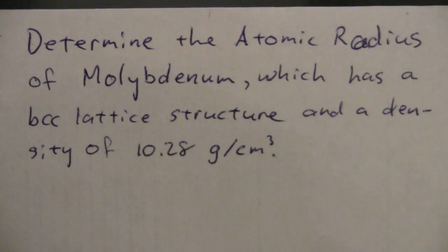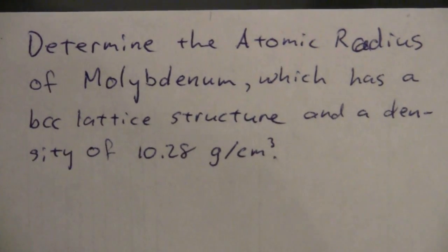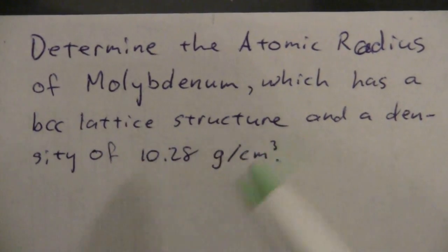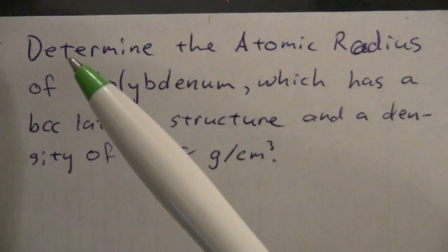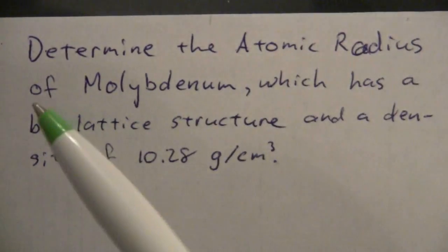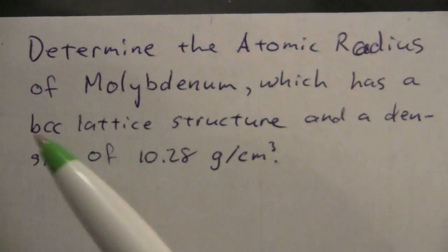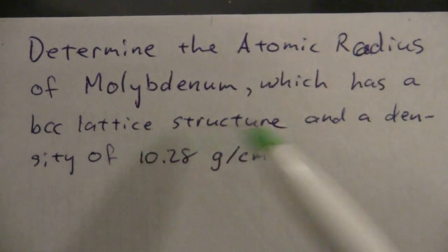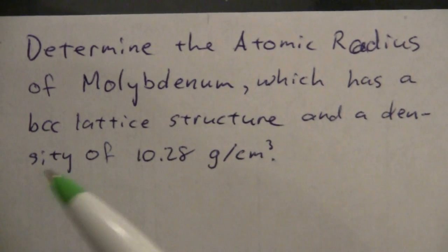Here's another example of some calculations using the lattice structure. We want to determine the atomic radius of molybdenum which has a body-centered cubic lattice structure and its density.